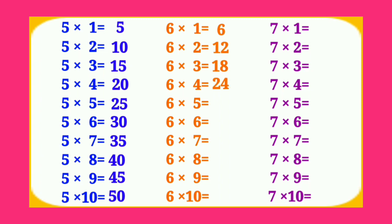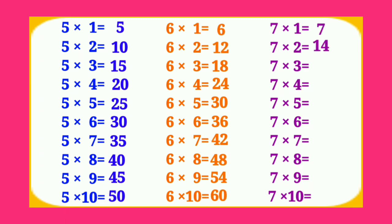6 5's are 30, 6 6's are 36, 6 7's are 42, 6 8's are 48, 6 9's are 54, 6 10's are 60. Table of 7. 7 1's are 7, 7 2's are 14.